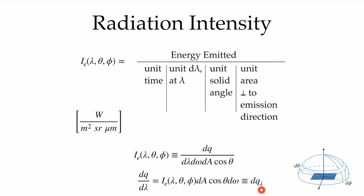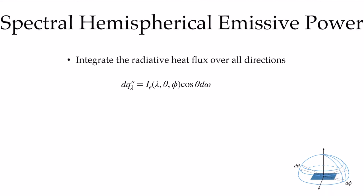We can rearrange for the energy per unit wavelength dQ_λ, then divide by the area to get the heat flux leaving the surface and passing through a differential solid angle. To get the spectral hemispherical emissive power, we integrate the radiative heat flux over all directions — integrating the zenith angle from 0 to π/2 and the azimuth angle from 0 to 2π, substituting dω = sinθ dθ dφ into the expression.